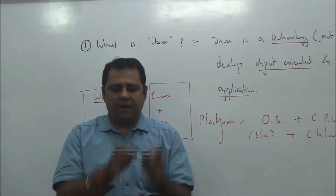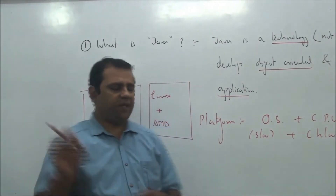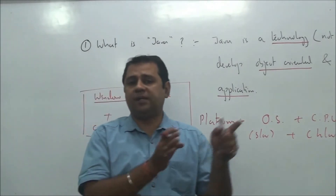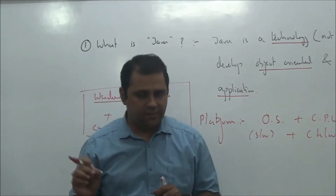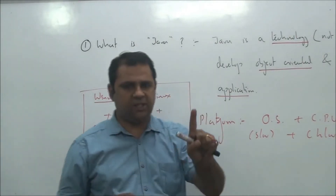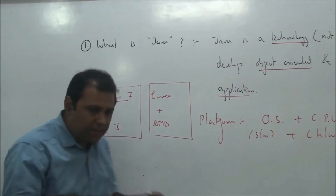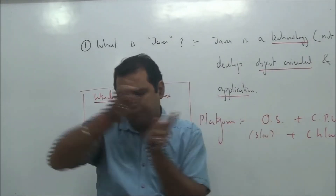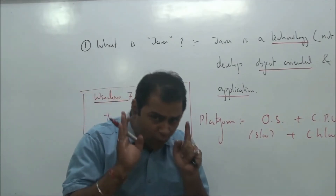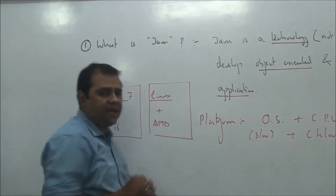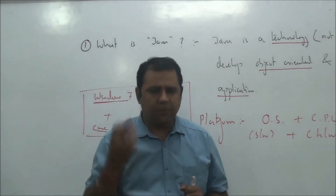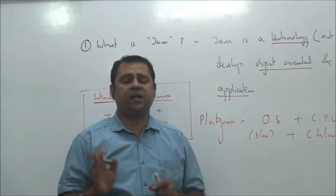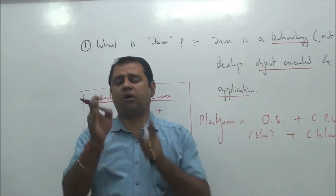Let's say I have 10 laptops, each having Windows 7 and Core i5. Physically they may appear to be 10 different machines, but logically from the point of view of a program, they all represent one single platform. However, if one of those machines is having Linux or Mac, the rest nine represent one platform and that single machine represents a different platform. Computers understand zeros and ones, but the way they understand it differs from one platform to another.